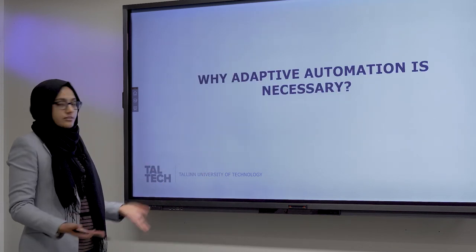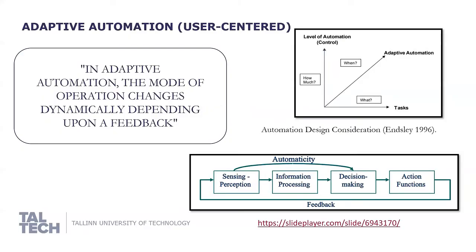At the highest level of automation — full automation — the human almost becomes out of the loop. In certain environments with uncertainty, we cannot give control back to the human, and there could be disastrous outcomes. In adaptive automation, there is a feedback from the system to the decision-making process. This is a basic diagram showing how automation works: we have sensing, we take information from the system, process it, and introduce a decision-making algorithm which determines what actions should be performed to achieve a specific goal.